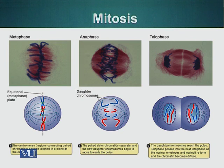After the cell has checked that all the microtubules have been attached to the kinetochore, the next phase starts: anaphase, in which chromosomes start to move apart. At this stage the glue binding the two chromatids has been degraded, and the two chromatids move towards the opposite poles.